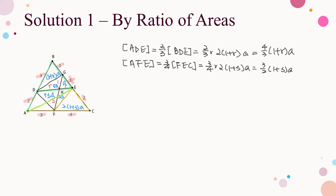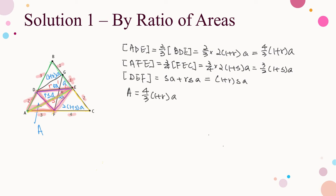Area of DEF equals SA plus RSA, that is (1 + R) times SA. Denote area of ADF by A-prime. Since area of ADF equals area of AFE plus area of ADE minus area of DEF, then A-prime equals (4/3)(1 + R)A plus (3/2)(1 + S)A minus (1 + R)SA. It simplifies to [17/6 + (4/3)R + (1/2)S − RS] times A. To set up the equation of R and S, we look for another way to express A-prime.